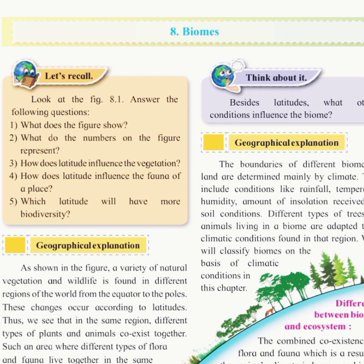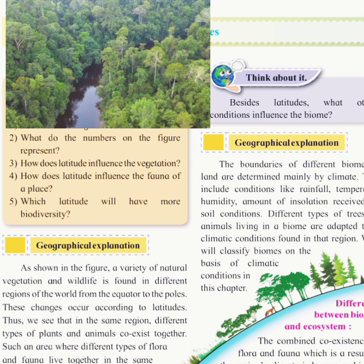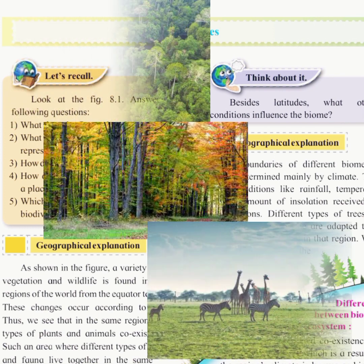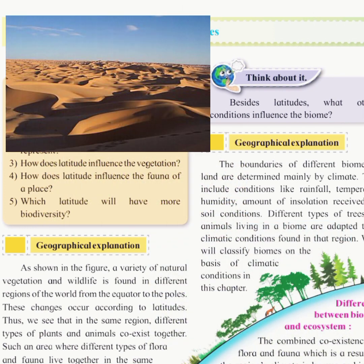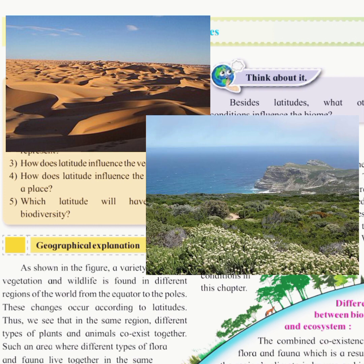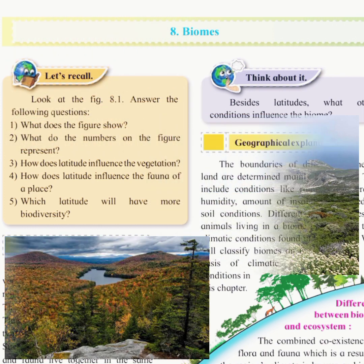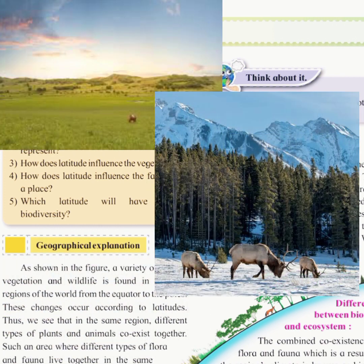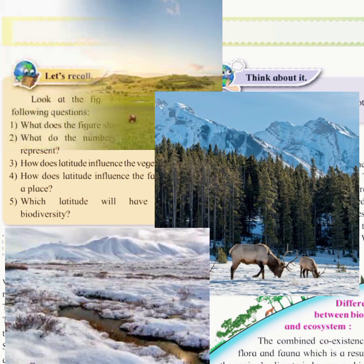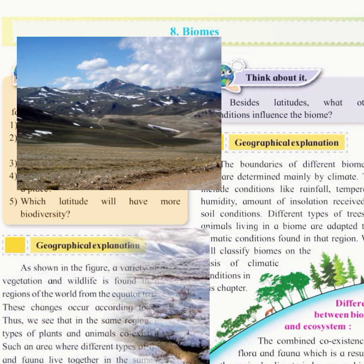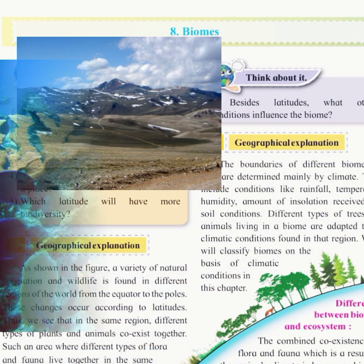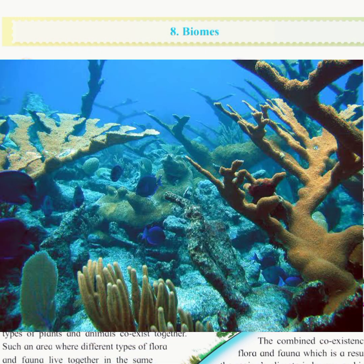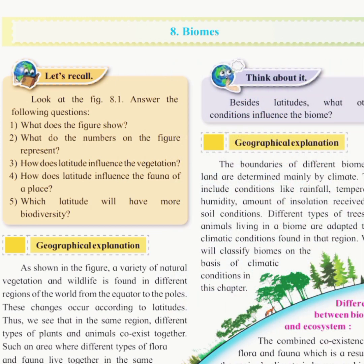There can be many ecosystems within a biome. In terrestrial biomes we will look at: tropical rainforest biome, tropical deciduous biome, savanna grassland biome, tropical desert biome, Mediterranean biome, temperate deciduous biome, temperate grassland biome, taiga biome, tundra biome, mountain or highland biome, and lastly aquatic biome.